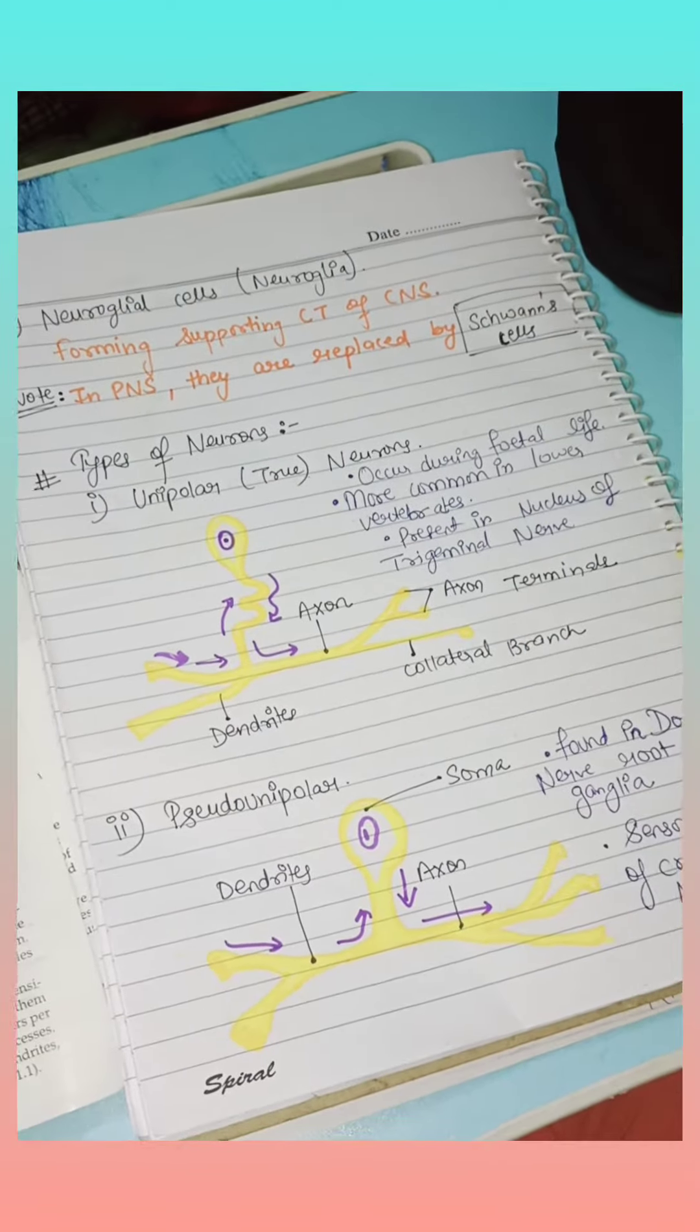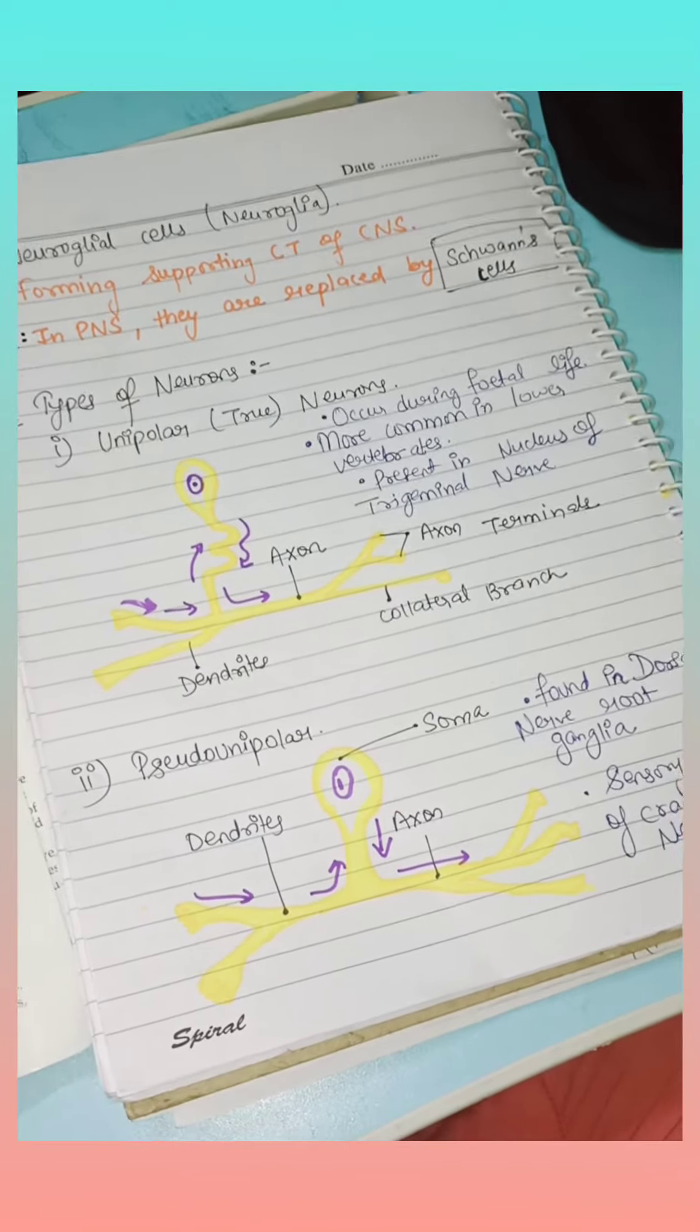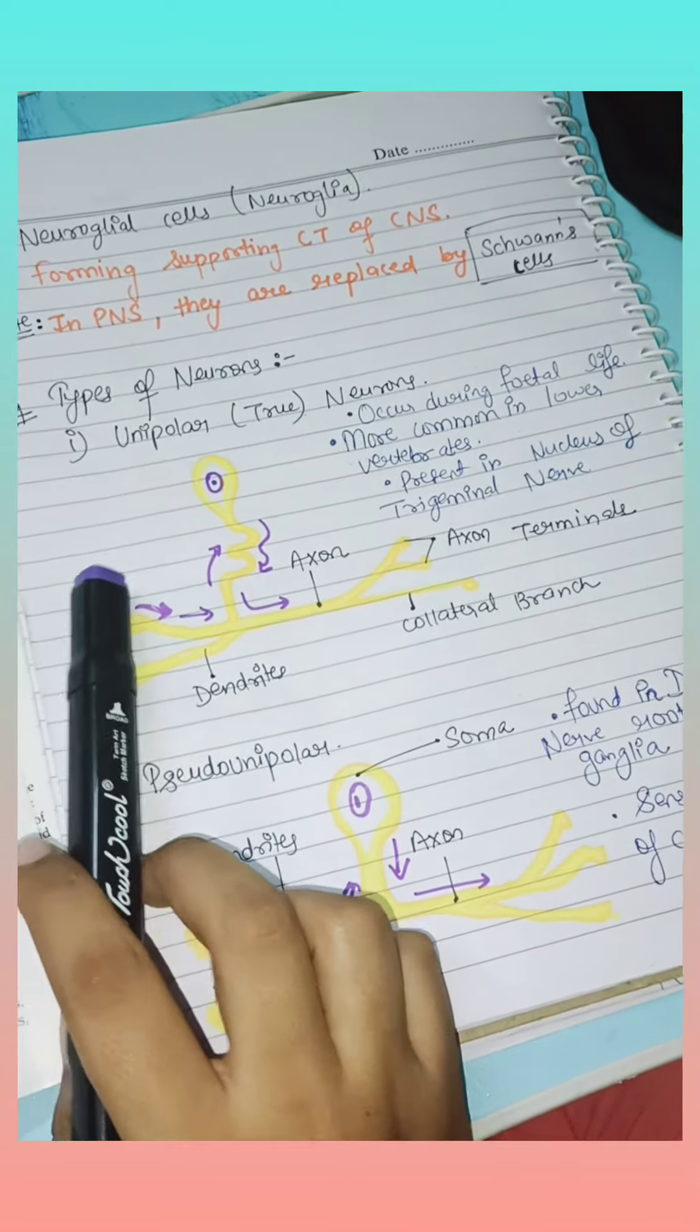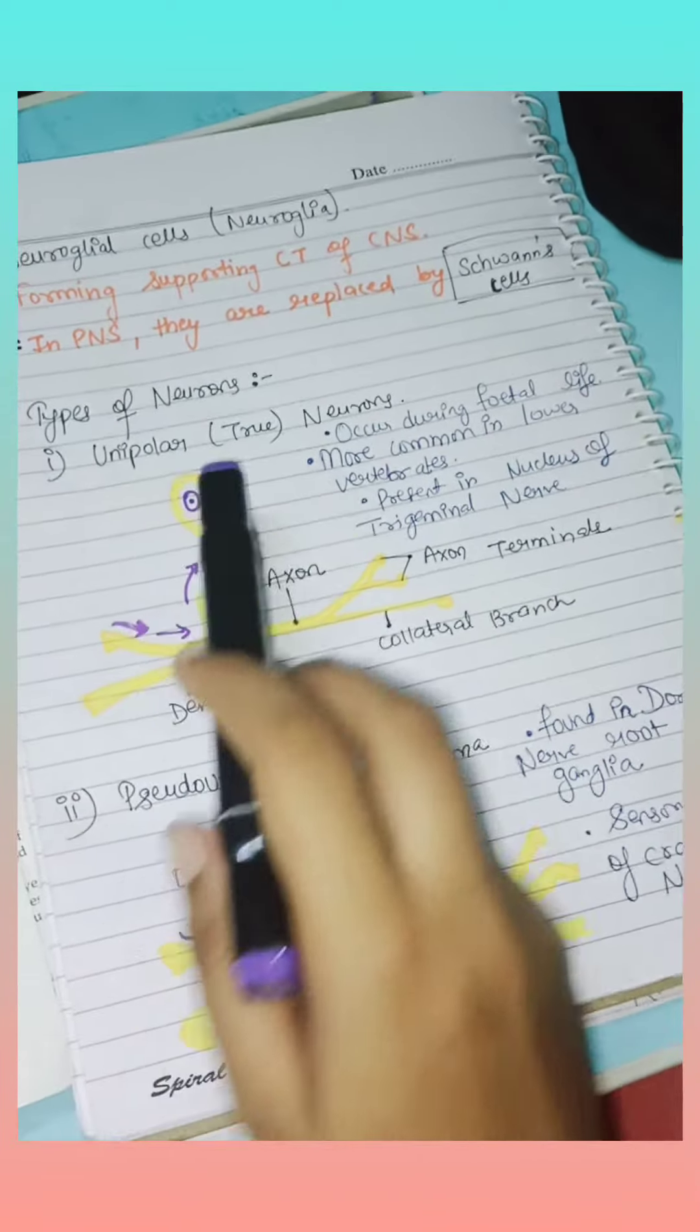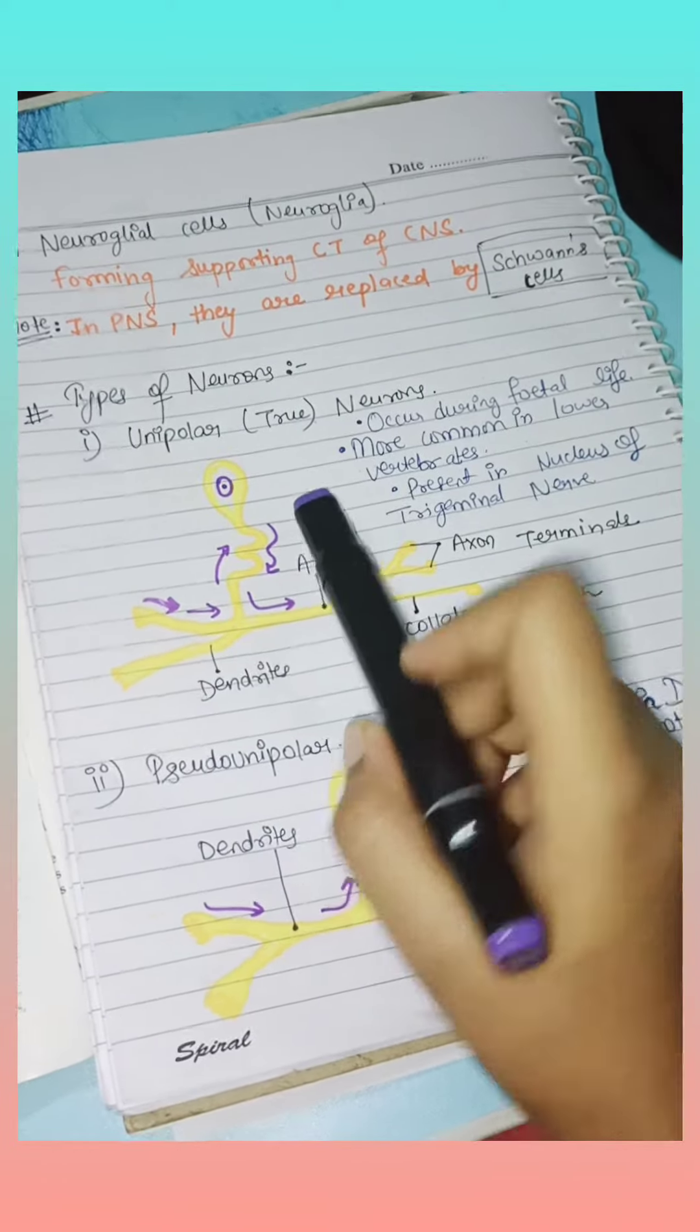Next is types of neurons. In the human body, we have three types of neurons: unipolar, pseudounipolar, and bipolar. First, we will study unipolar. Unipolar is also known as the true neuron. This is its structure. It is found in fetal life and lower vertebrates.